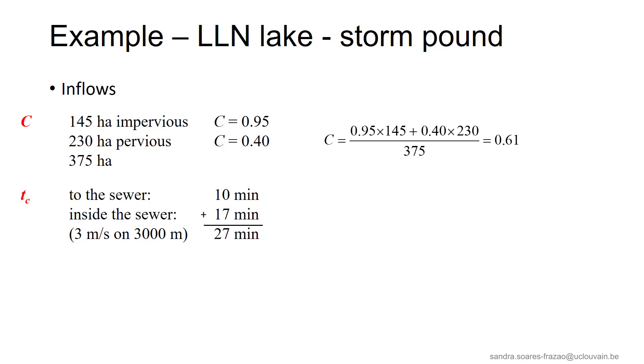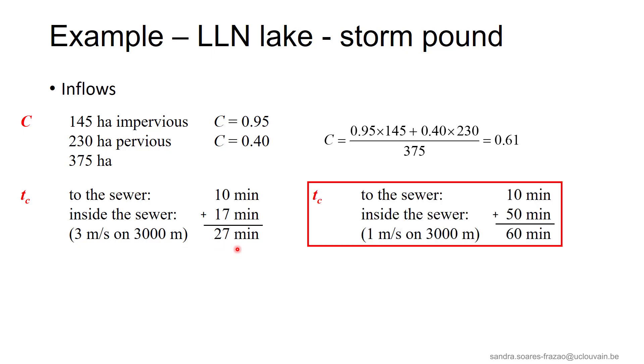However, the assumption regarding the flow velocity in the sewer is questionable. 3 m per second is a very fast flow, and the result is a quite short time of concentration. If we consider a more classical value for the velocity, that is 1 m per second, we obtain this new estimate for the time of concentration, that is now 60 minutes. This difference could affect the design of the sewer network, but it won't affect the size required for the storm pond, which is our point of interest here.